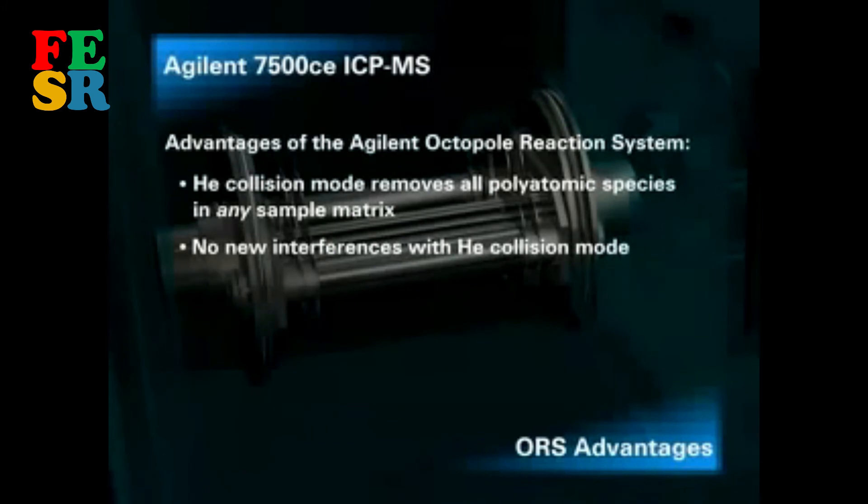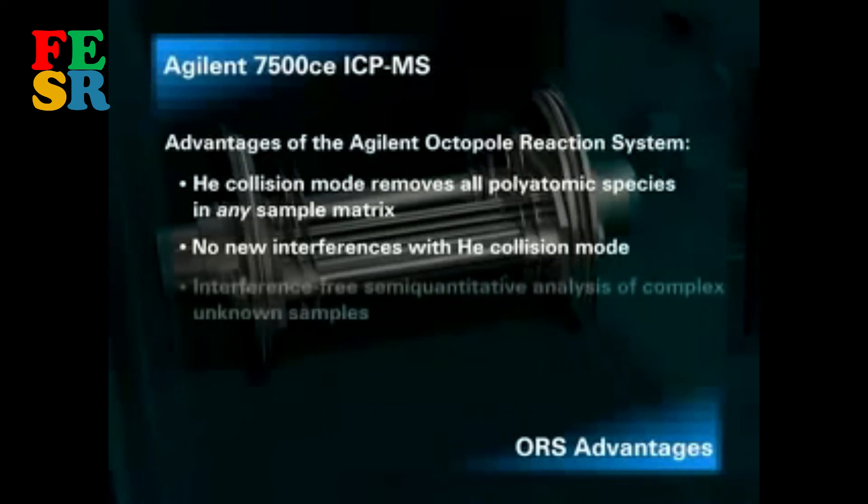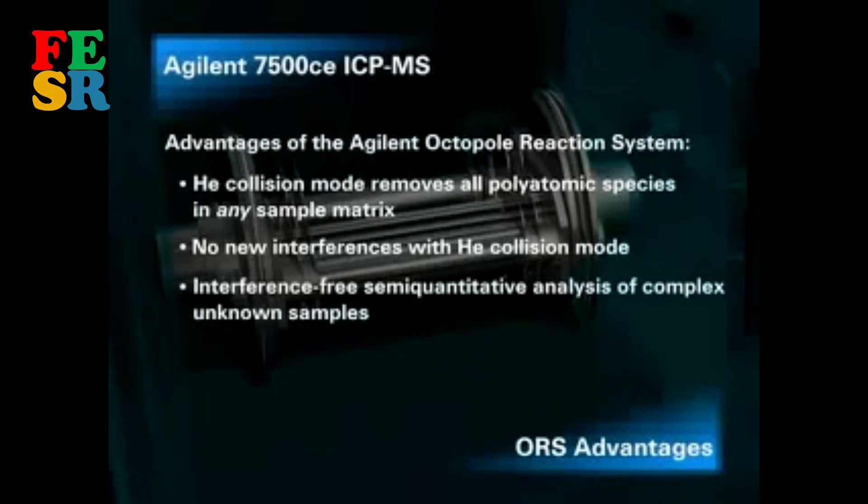Reactive gases are not suitable for multi-element analysis in complex sample matrices, since they react with the sample matrix, forming new interferences in the cell, which can bias analytical data. Helium collision mode enables rapid and accurate semi-quantitative analysis. More than 60 elements can be measured in a completely unknown sample in approximately one minute, without the need to run calibration standards.